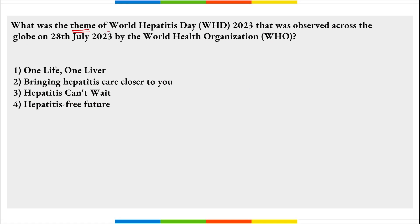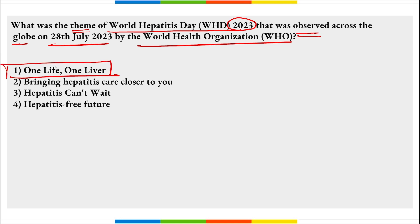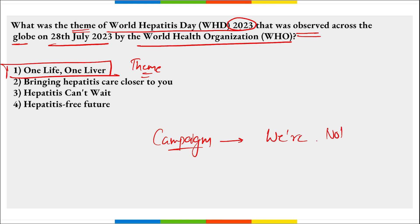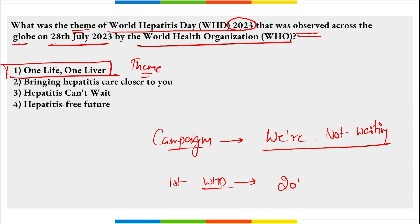What was the theme of World Hepatitis Day 2023 observed by WHO on 28th July? The theme is 'One Life, One Liver.' There was also a campaign: 'We Are Not Waiting.' The first ever World Hepatitis Day was observed in 2011.